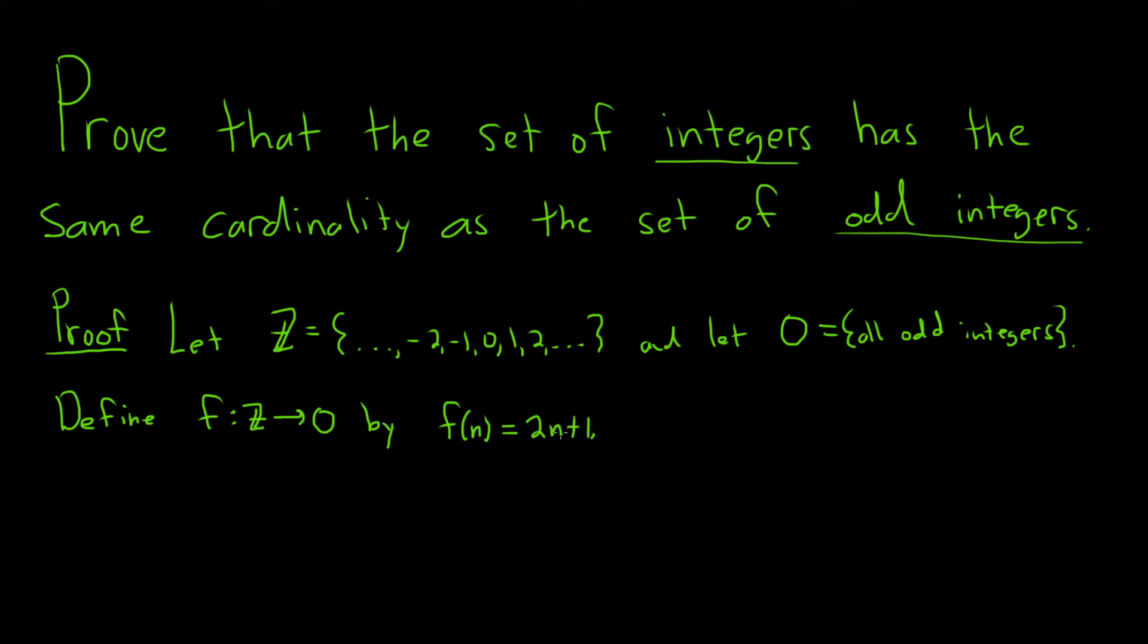So now we just have to show that this is a bijection. That means we have to show that it is 1 to 1 and onto. So let's do each piece separately. Claim f is 1 to 1.